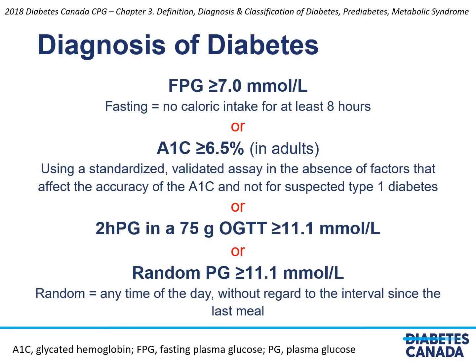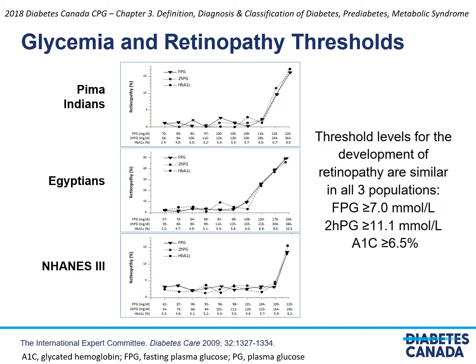The diagnostic criteria for diabetes are values above the following thresholds: fasting plasma glucose of 7.0 millimoles per liter or more, hemoglobin A1c of 6.5 percent or more, or a 2-hour plasma glucose in a 75 gram oral glucose tolerance test, or a random plasma glucose of 11.1 millimoles per liter or more. These thresholds were determined based on levels at which the prevalence of diabetic retinopathy significantly rises for each of the tests in different populations.